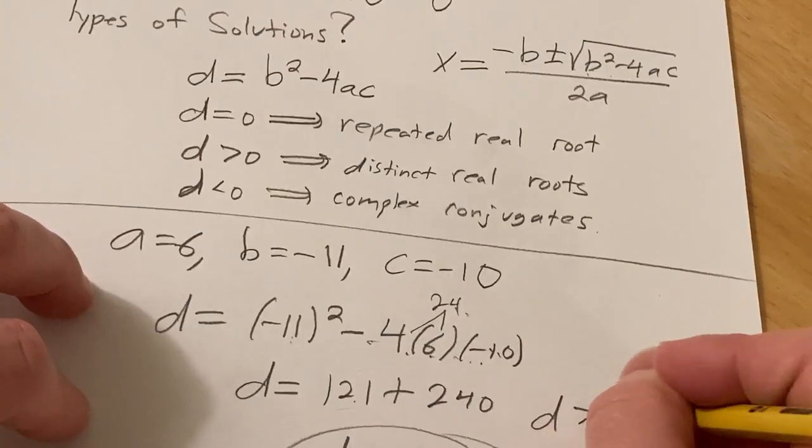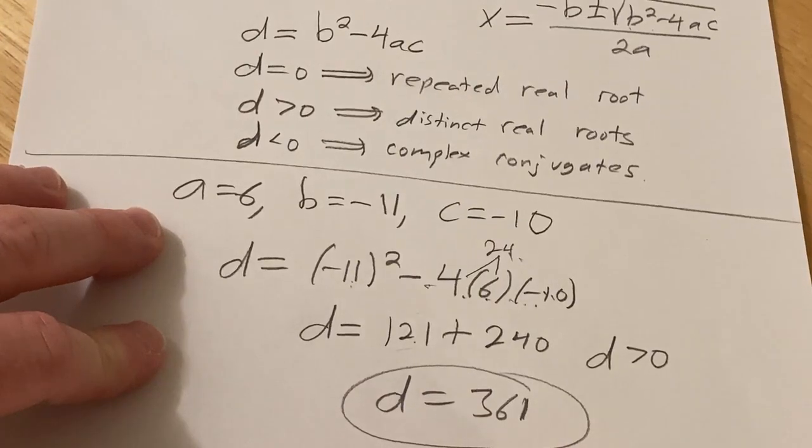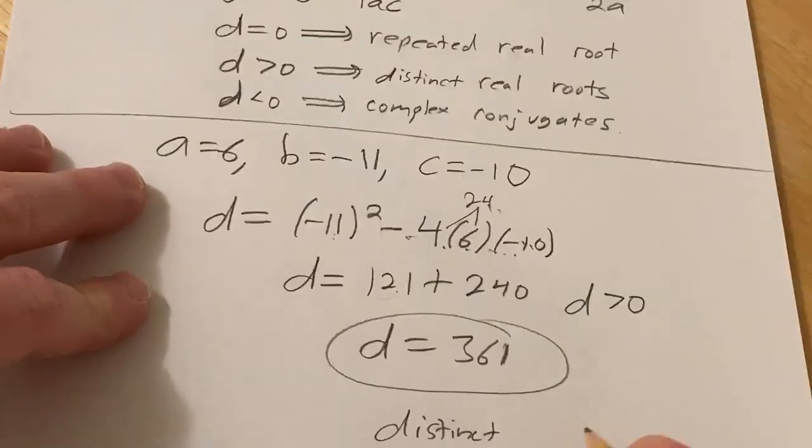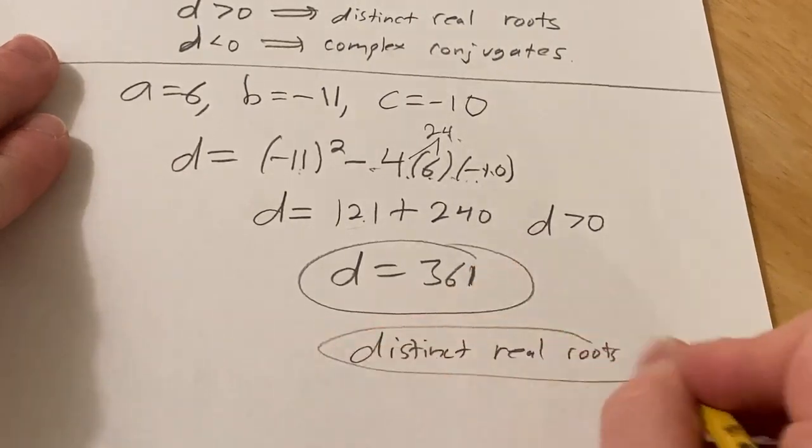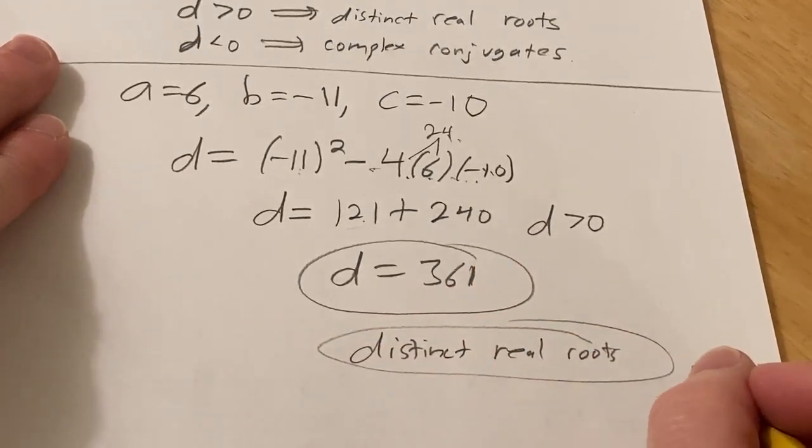So in this case, d is positive, so we have distinct real roots. Pretty cool.